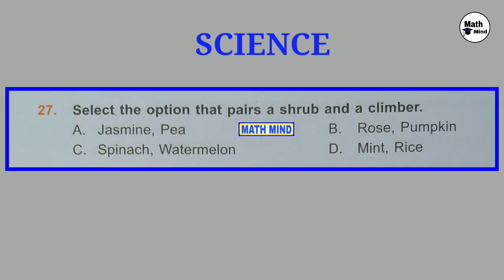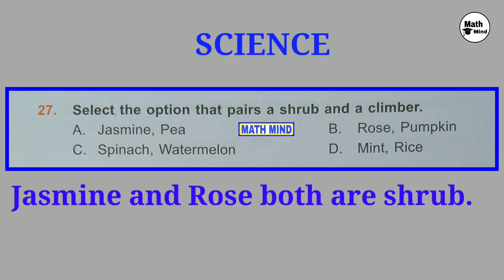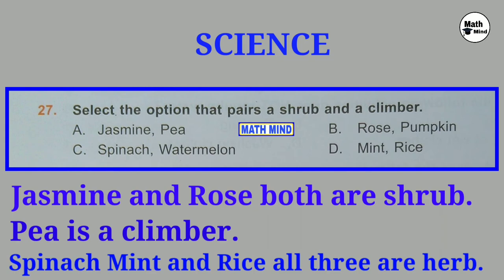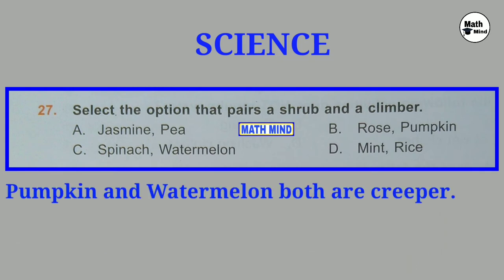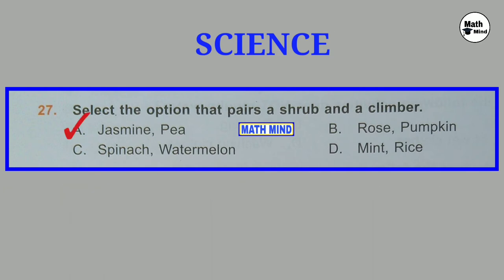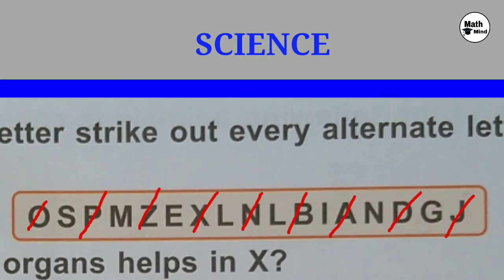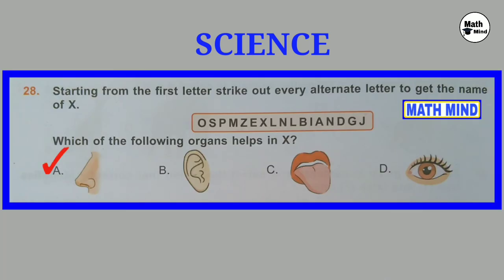Question number 27: Select the option that pairs a shrub and a climber. Jasmine and rose are both shrubs. Pea is a climber. Spinach, mint and rice are all herbs. Pumpkin and watermelon are both creepers. So correct option is A: Jasmine is a shrub and pea is a climber. Question number 28: Starting from the first letter, strike out every alternate letter to get the name of X. Which of the following organs helps in X? Striking out alternate letters we get the word 'smelling' (S-M-E-L-L-I-N-G). Clearly, nose helps in smelling. Correct option is A: Nose.